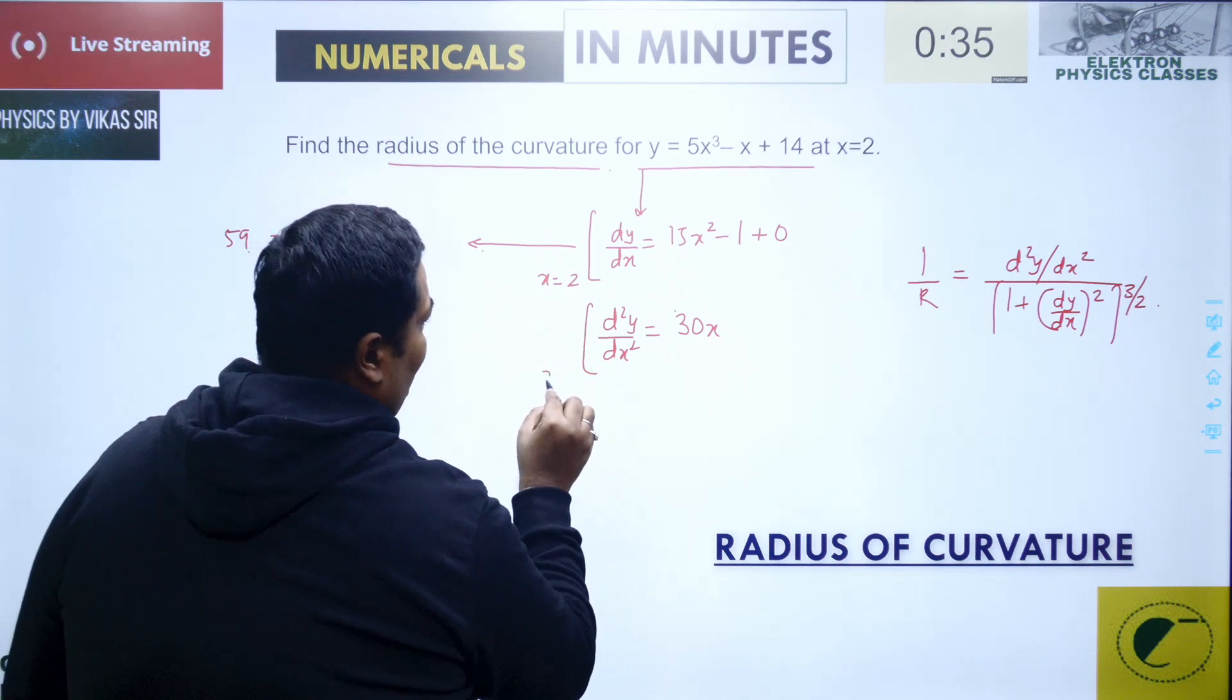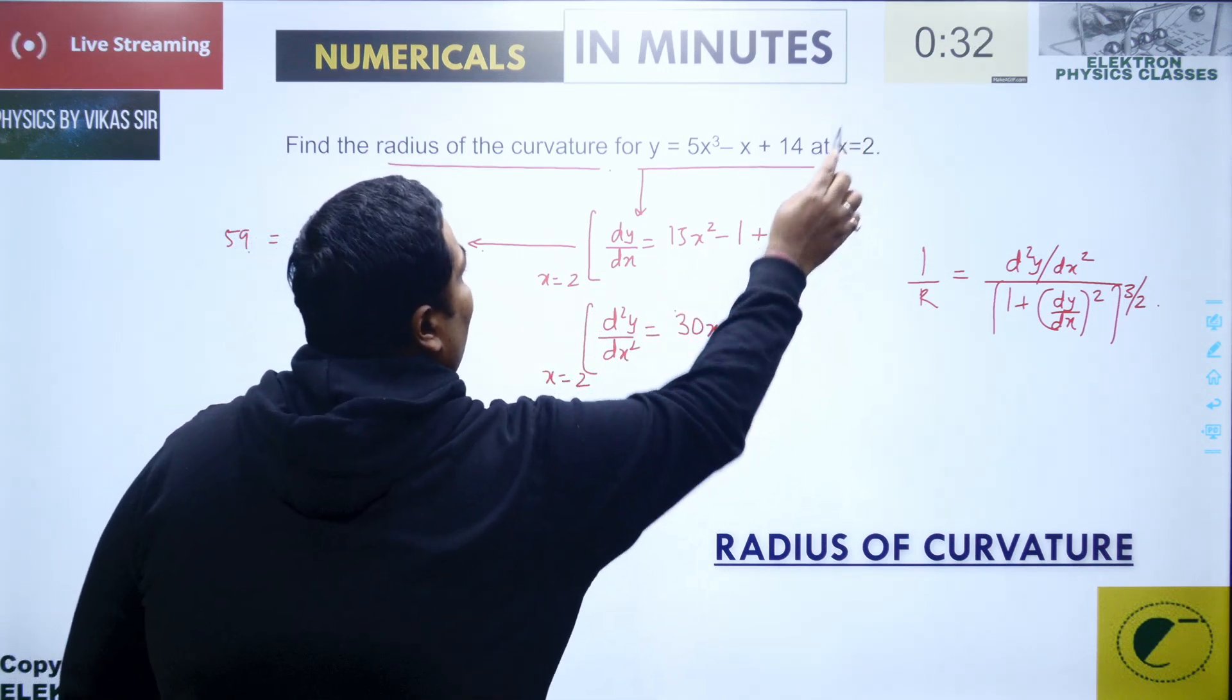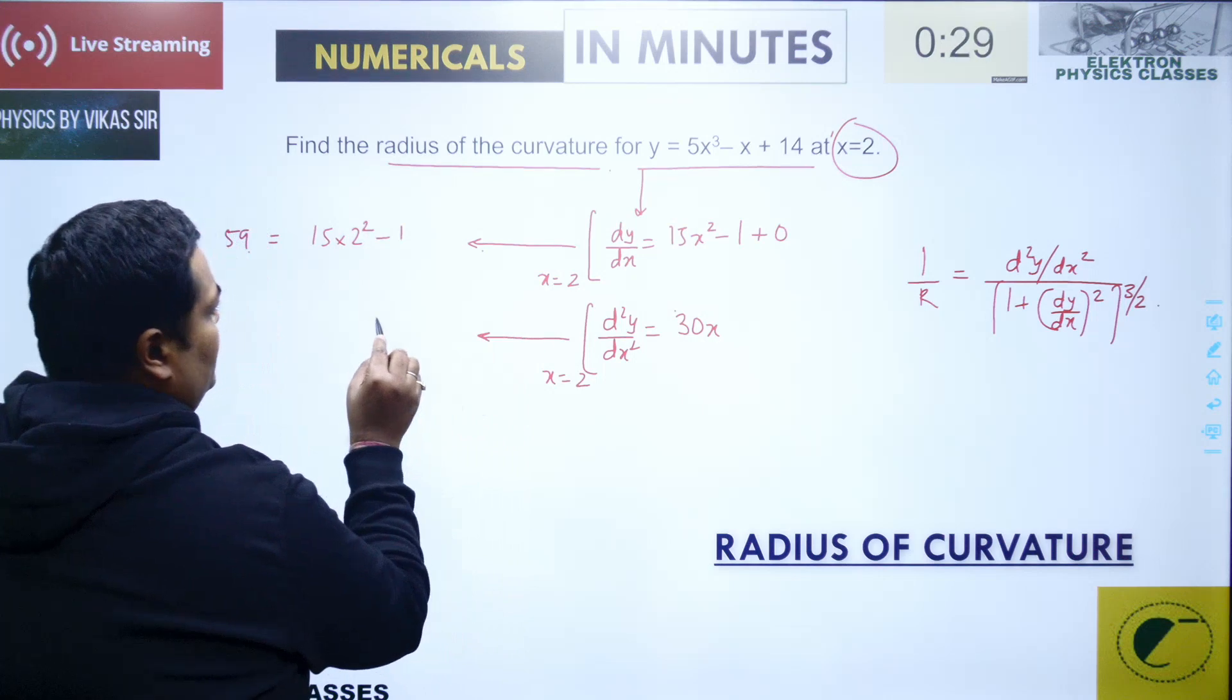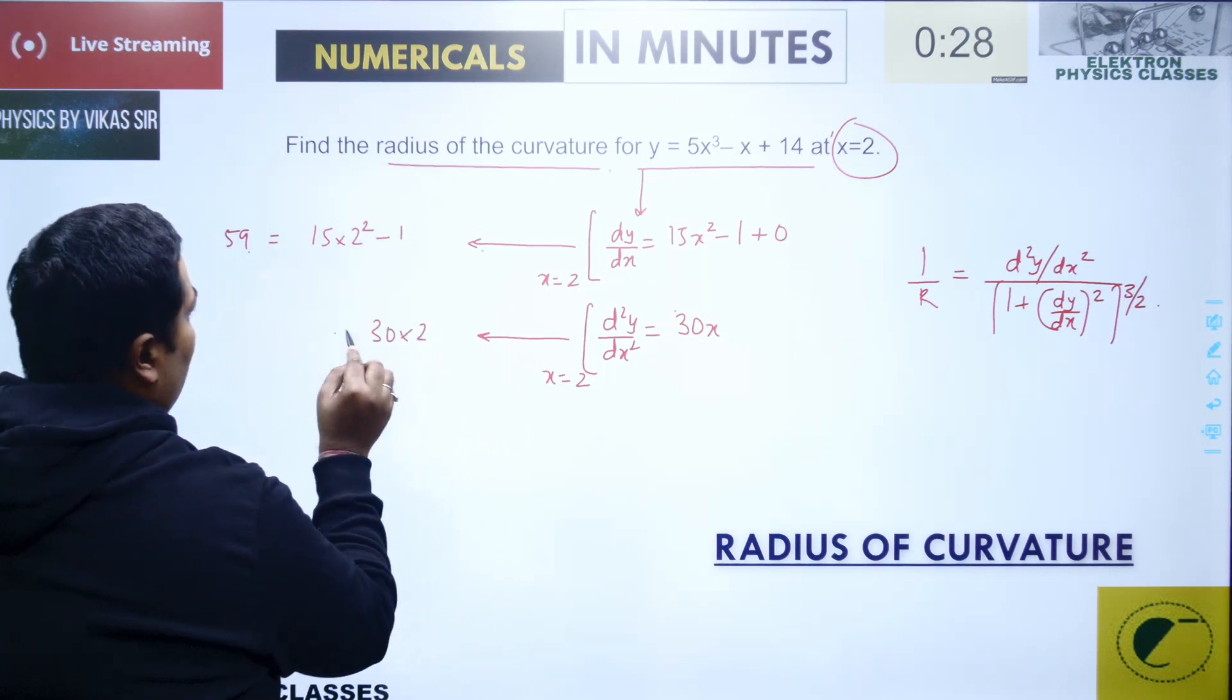I wish to calculate this value also at x equal to 2 as the question demanded. So at x equal to 2, this value becomes 30 into 2, that's equal to 60.